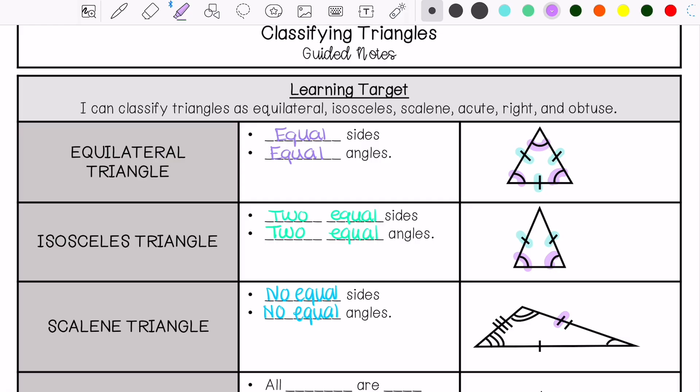So as you can see, these are all different. They have all different amounts of tick marks. That means all the sides are different, and we have all the angles are different.